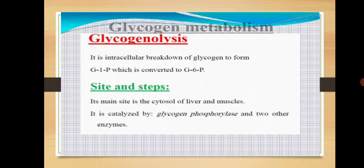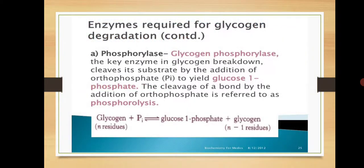The site for glycogenolysis: glycogen is synthesized in the cytosol of liver and muscles. The amount of glycogen in the liver is about 6-8%, and in muscle it is less — about 1-2%. It is catalyzed by different enzymes; the main important enzyme is glycogen phosphorylase, and others include debranching enzyme and transferase enzyme.